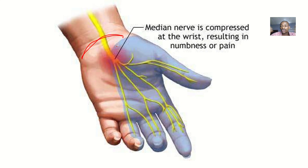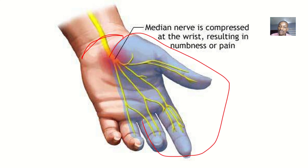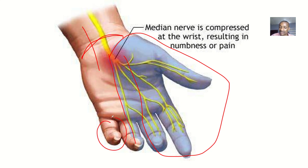In carpal tunnel syndrome, you could overuse your wrist, leading to compression of the median nerve, or there could be trauma or fracture causing that compression. When the median nerve is compressed, the area it supplies becomes numb and painful. There is also the ulnar nerve passing nearby, which supplies half of the ring finger and the pinky finger — those areas will not be affected because they are not supplied by the median nerve.